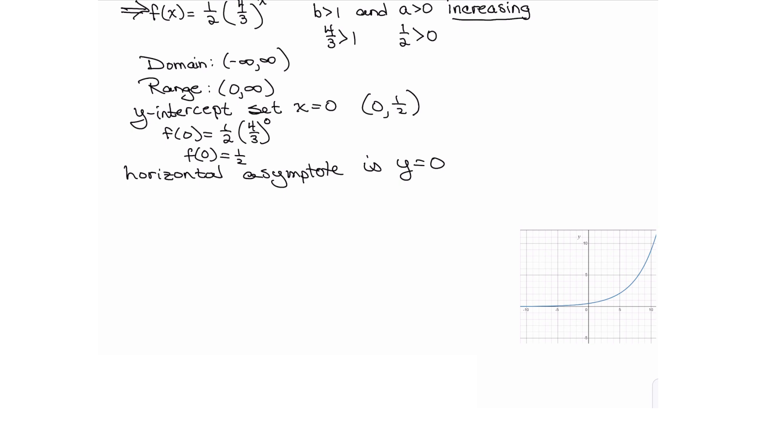My domain is all reals. So as I look from left to right there will be graph throughout. My range, as you scan this from bottom to top, there isn't any graph until you are above the x-axis and then forever up. So that verifies that our range is open parentheses at 0 off to infinity.